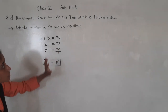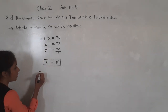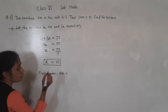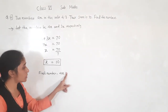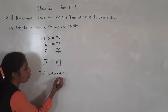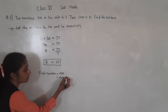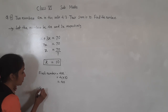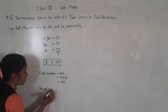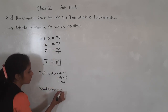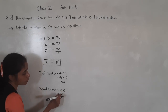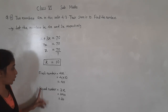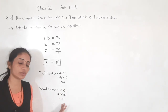Now what we have to find: find the numbers. First number is 4x. 4x means 4 multiplied by x. x is 10, so 4 tens are 40. First number is 40. Second number is 3x. 3x means 3 multiplied by x. x is 10, so 3 tens are 30. So the first number is 40 and the second number is 30.